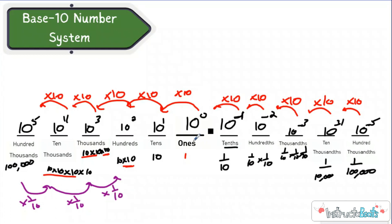So if you went from the ones to the hundreds, you got 100 times bigger because you had to go ten times ten. If you went from the hundredths to the tens, you had to go times ten, times ten, times ten — so tens is one thousand times bigger than a hundredth. And that place value understanding will make this a lot easier today.